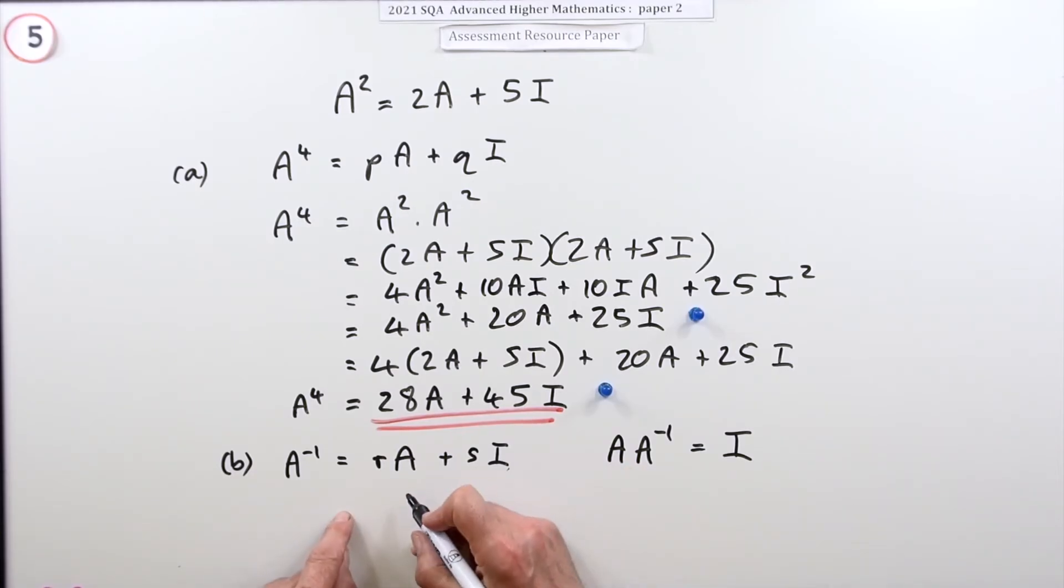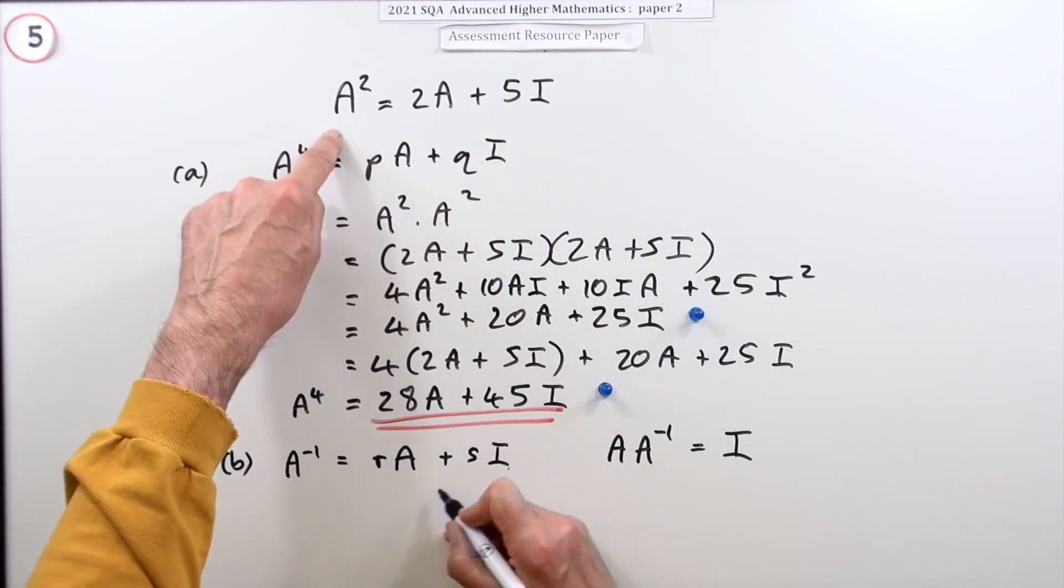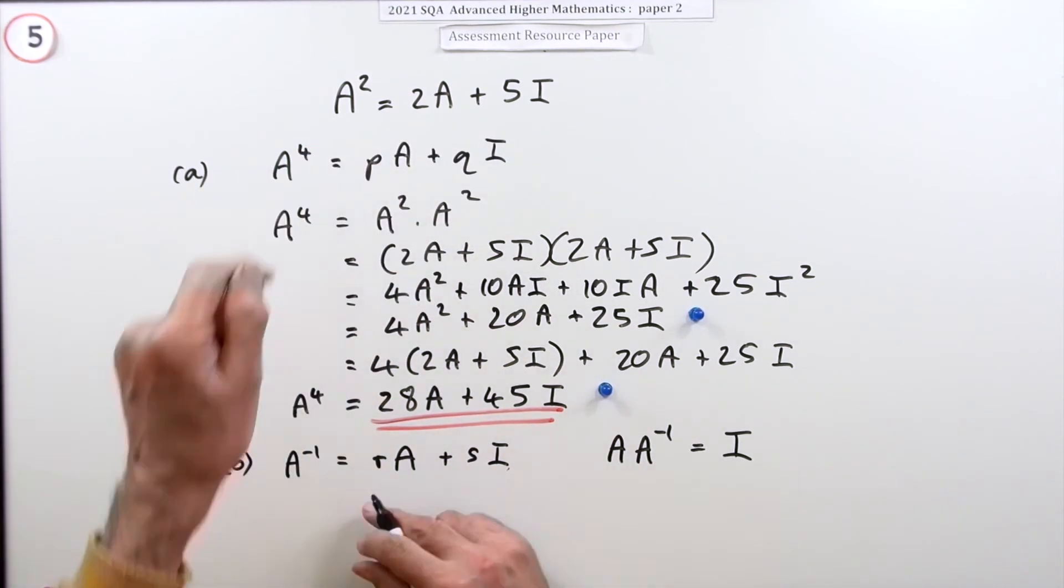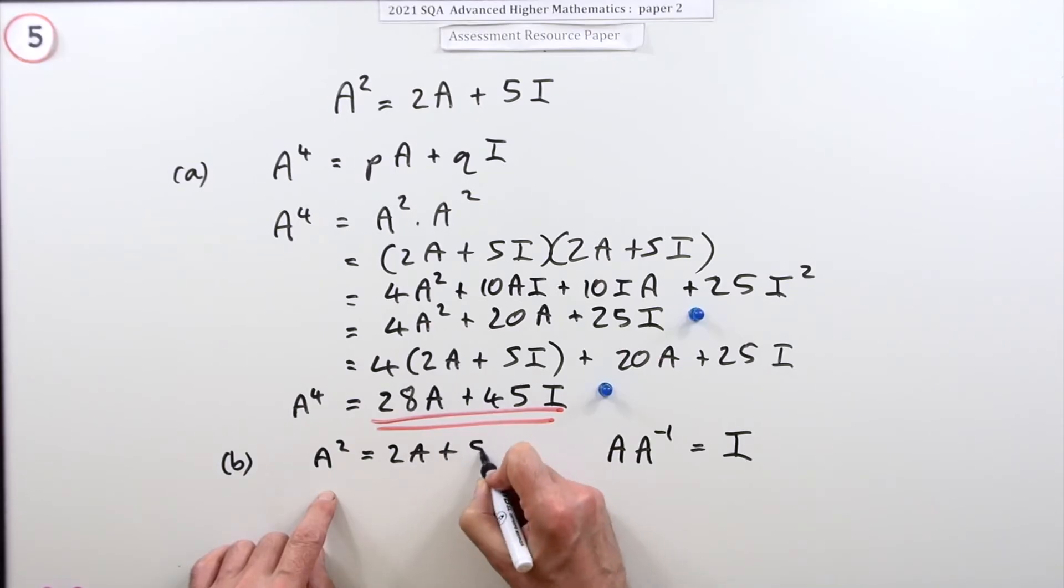I'll leave myself an awful lot of room, I'll just squash it in here. If you start with that equation, A² = 2A + 5I, and leave this side as I, so I'm going to take everything over. That means I'm going to have A² take away 2A...